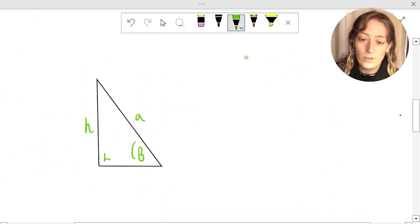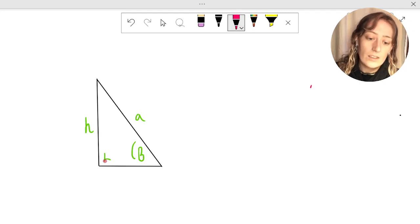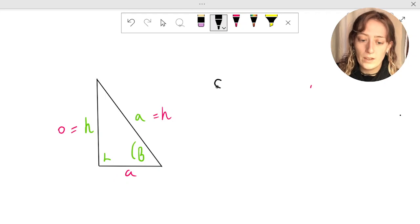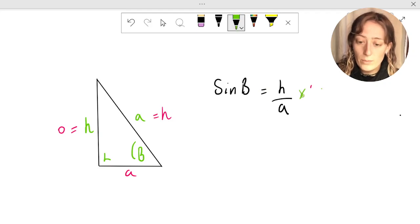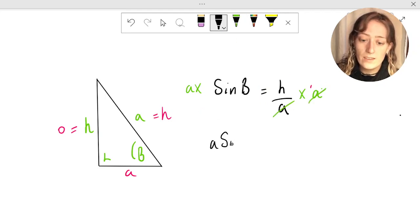Same thing. Let's label each side. It's opposite the right angle, so a is the hypotenuse. It's opposite the angle, so h is the opposite. This is just the adjacent, which we don't need. Therefore, sine of b equals opposite h over hypotenuse a. Simplifying again, we can multiply both sides by a without changing anything. Our a's cancel. We're left with a sine of b equals h.